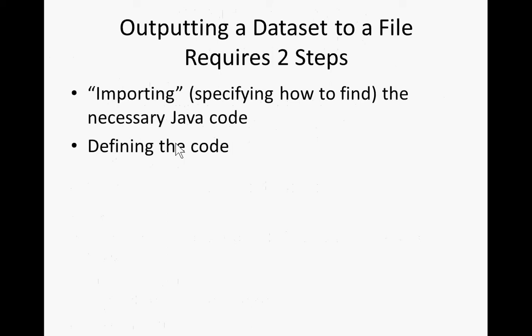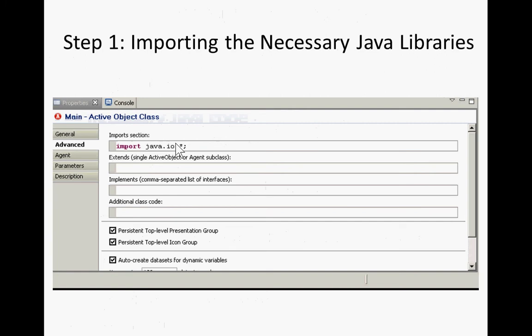To output a data set to a file requires two steps. First, you have to specify how to find the necessary external Java code, and then you define the code. The first step is doing what's called an import of the necessary Java libraries. If you click on main, you'll find there's an advanced tab with something called the import section — this specifies what Java libraries need to be made available for reference.